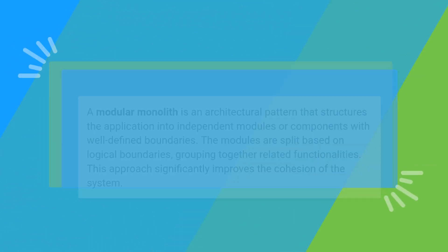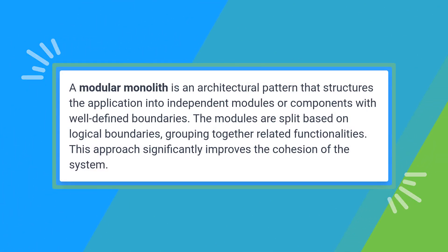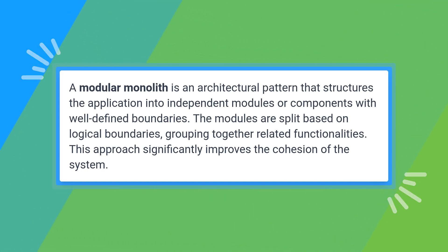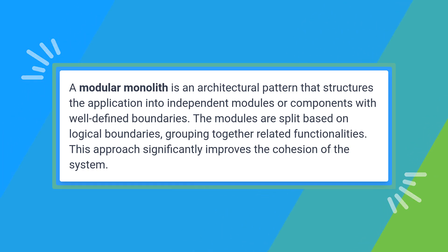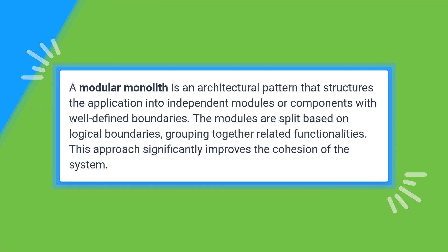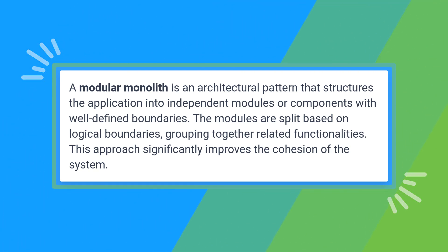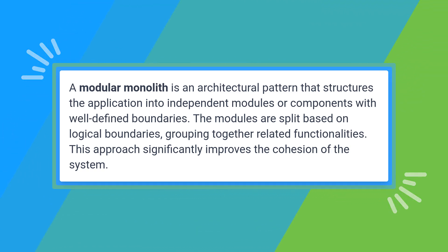So what is a modular monolith? A modular monolith is an architectural pattern that structures the application into independent modules or components with well-defined boundaries. The modules are split based on logical boundaries, grouping together related functionalities. This approach significantly improves the cohesion of the system. The modules are loosely coupled, which further promotes modularity and separation of concerns.